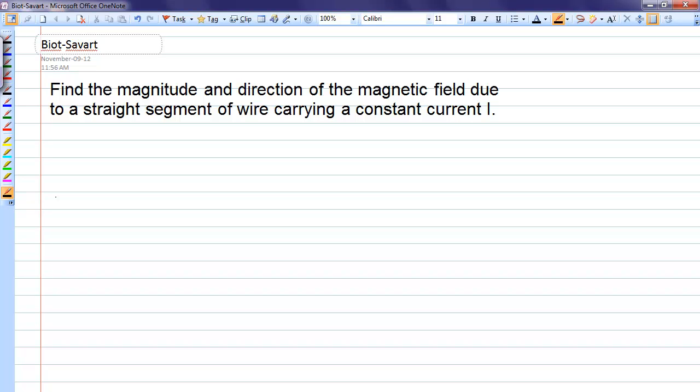In this problem we're going to calculate the magnetic field due to a long straight segment of wire carrying a current I. I'm going to put the segment of wire on the x-axis.